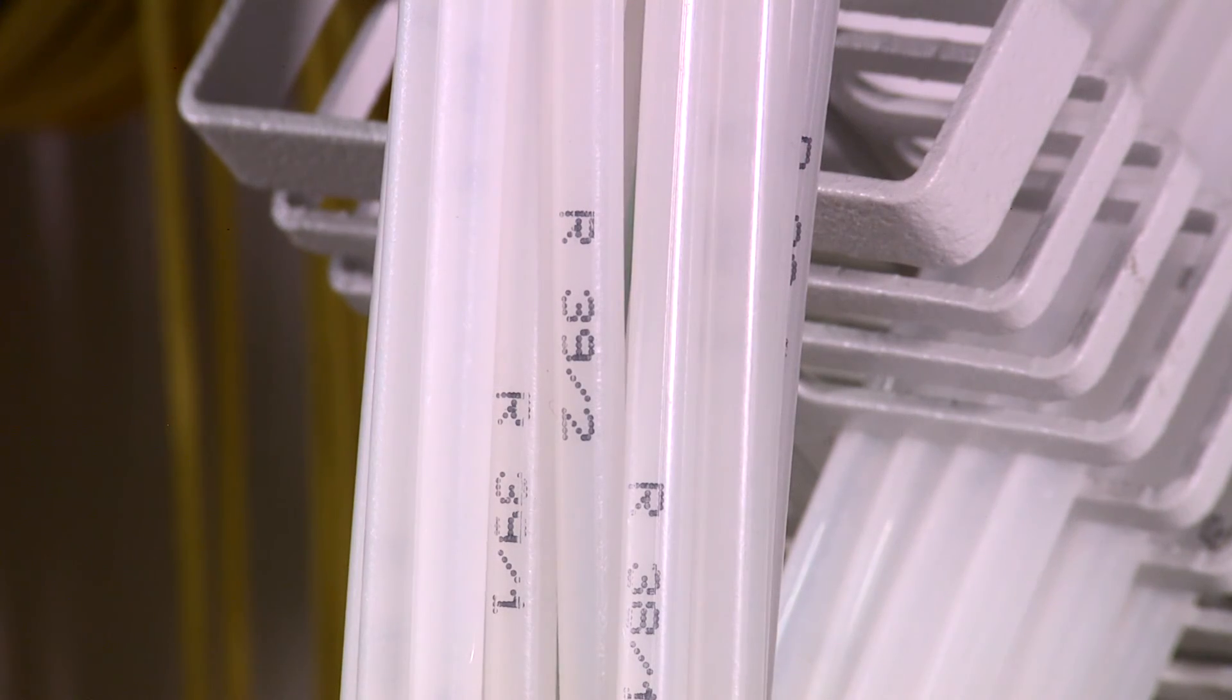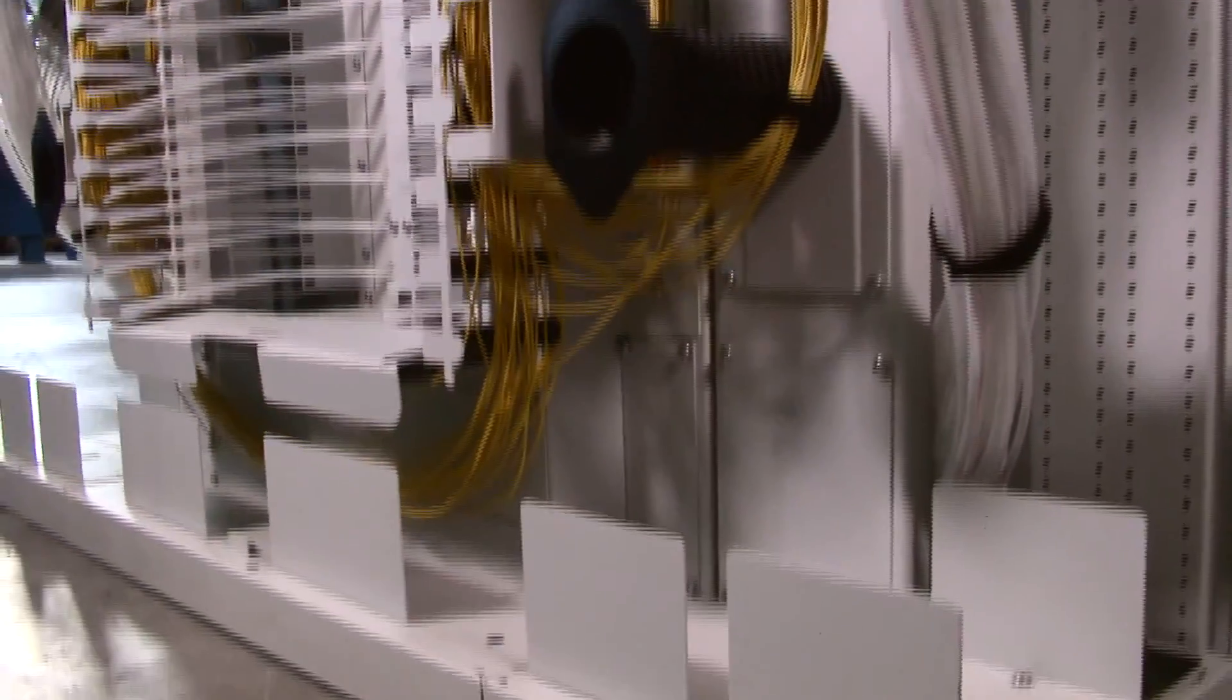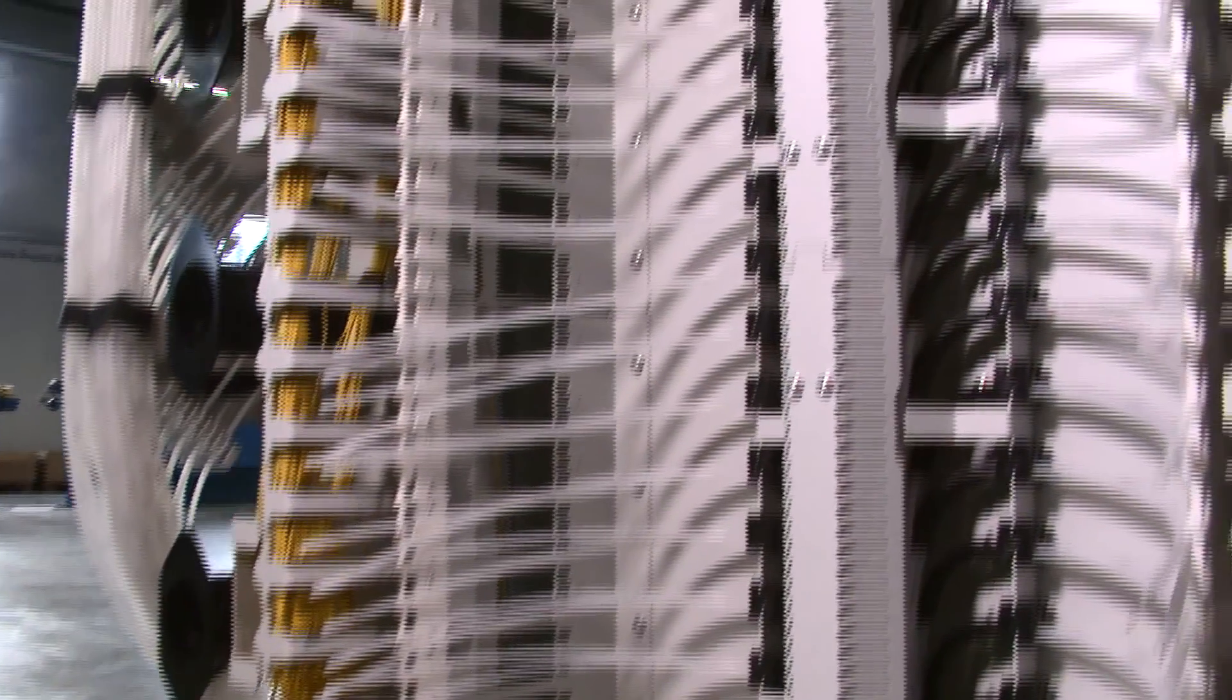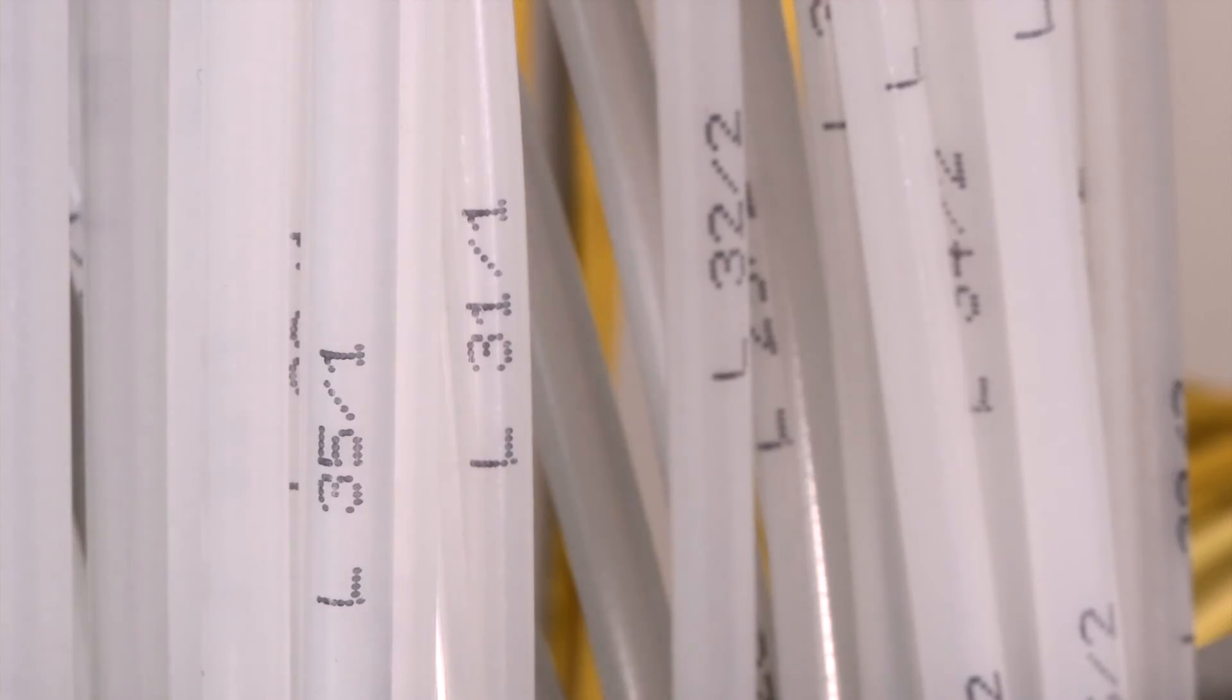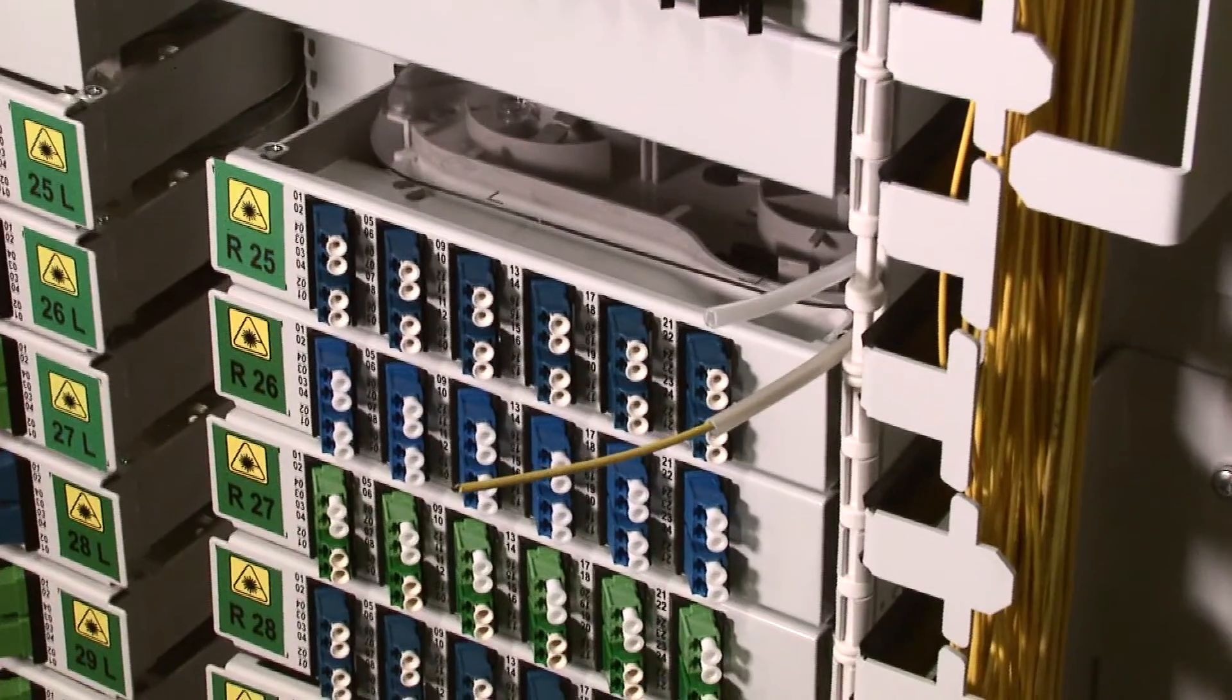These fiber protection tubes, made from halogen-free material, protect the loose fibers of an incoming cable from the cable catch up to the fiber modules. They are marked individually corresponding to each fiber module position and can be ordered from us already pre-assembled.